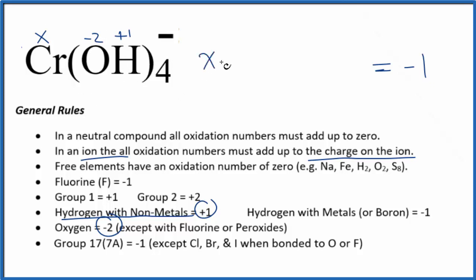We could say X, that's the chromium, plus, let's just do it like this, minus 2 and plus 1 is minus 1, times the 4. That'll equal the 1 over here.